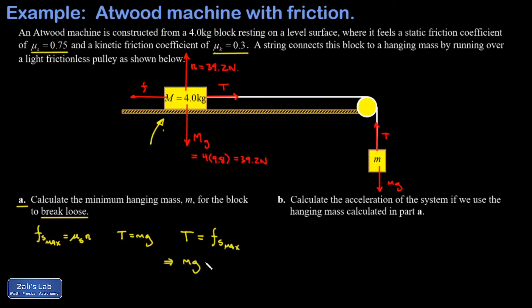I can plug in that T is equal to little mg. That's only true if the system is static. Then I plug in the formula for the max static friction, which is μs times the normal force, and I'm able to solve for little m. We plug in the static friction coefficient, we plug in the normal force that we computed already, we plug in g, and we get a mass of 3 kg that's going to cause this thing to break loose.